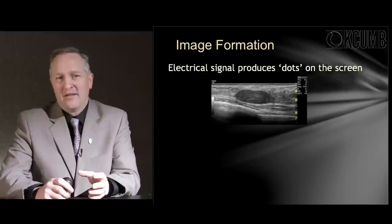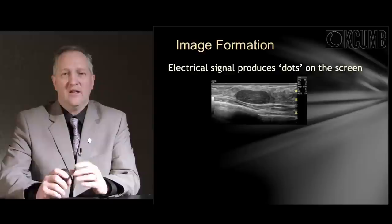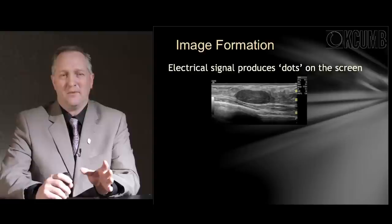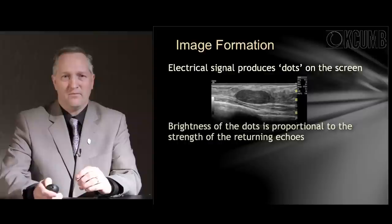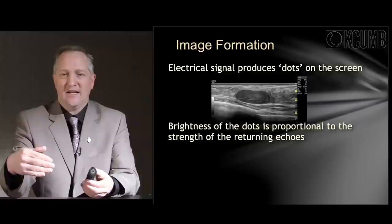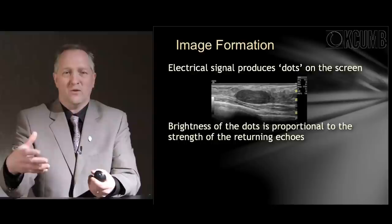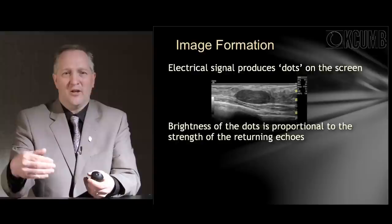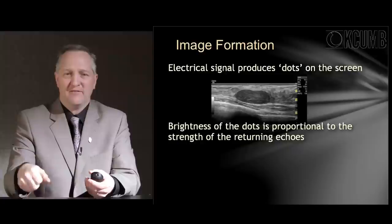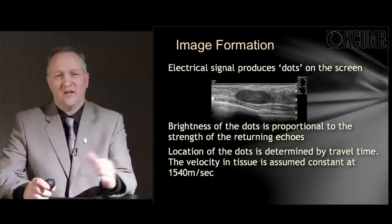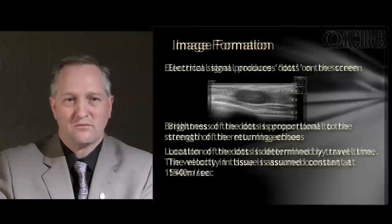As information returns to the ultrasound head, the electrical signal is interpreted by the machine to show essentially dots on the screen. If you know your anatomy and know what you're looking for, the dots are much easier to interpret. The brightness of the dots helps you understand how far away or how dense the structure was relative to the ultrasound head. Brighter images represent more dense structures because the echo returns faster off thicker material — like off a tabletop versus through air. The location of the dots on screen represents the velocity of the echo as it comes back through the tissue.